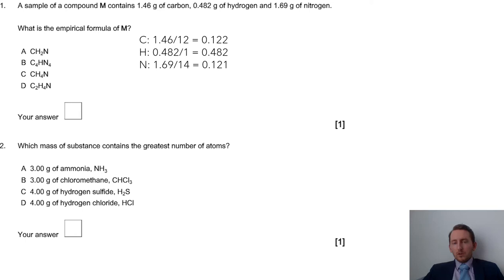So we work out what those are, giving us 0.122, 0.482, and 0.121. At this point, you want to take whichever one of those answers you've just worked out, take the smallest value and divide all of them by that particular one. So this one would be our lowest, 0.121, so we divide all three answers by 0.121.